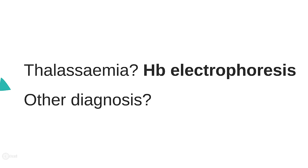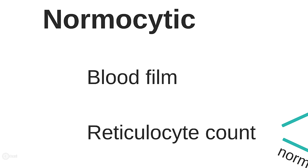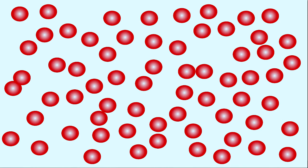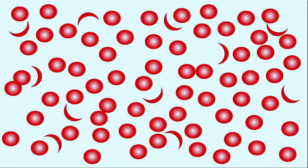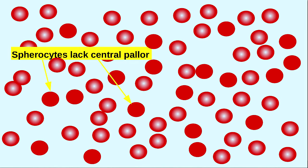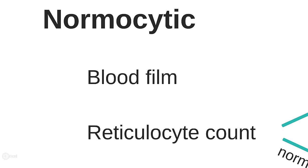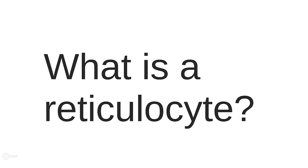Normocytic anemia can be tricky. The most useful tests here will be a blood film and a reticulocyte count. A blood film involves a biomedical scientist spreading the patient's blood sample on a glass slide and looking at it under a microscope. It can give us valuable clues as to the diagnosis — for example, they might see sickling cells, spherocytes, or signs of a marrow disorder.